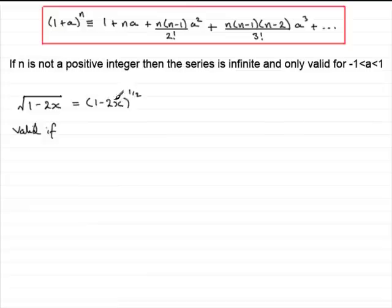It's valid if the a value, which in this example is minus 2x, lies between minus 1 and 1. So we can say that it's valid if minus 2x lies between minus 1 and 1.